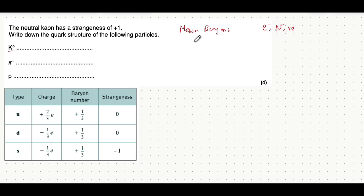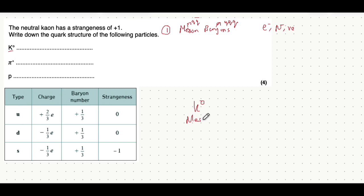Moving on then, the first question you need to ask yourself is: are these mesons or baryons? The reason for that is because mesons are made up of a quark and anti-quark pair, whereas baryons are made up of three quarks. So for example, in this first one — the K-naught meson — this is a meson, as indicated by the name.